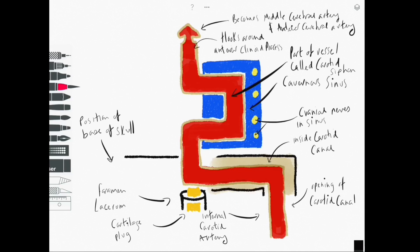Now would be a good time to think about some of the major branches that come off of the vessel as it courses through the skull. The first one would be the hypophyseal vessels. The hypophyseal vessels supply the pituitary gland and come from the cavernous segment.